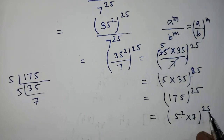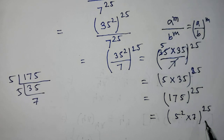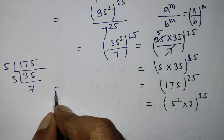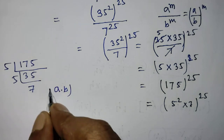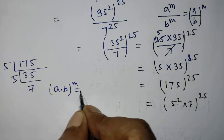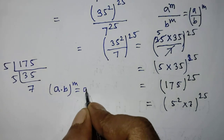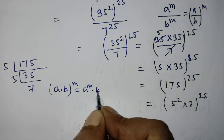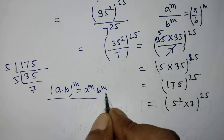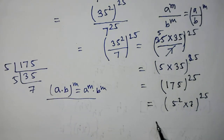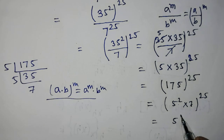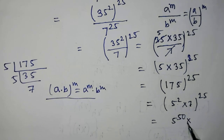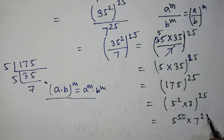To simplify this exponential form, we have to apply the formula again. According to this formula, it will be 5 to the power 50 times 7 to the power 25.